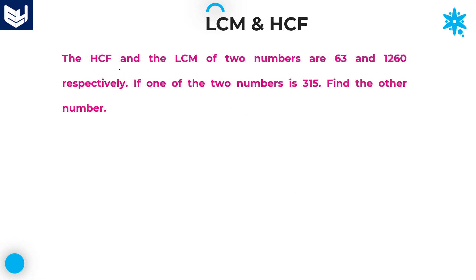The HCF and LCM of two numbers are 63 and 1260 respectively. So 63 is the HCF and 1260 is the LCM. If one of the two numbers is 315, we need to find the other number. This problem is also similar to the previous model — product of two numbers equals LCM into HCF.